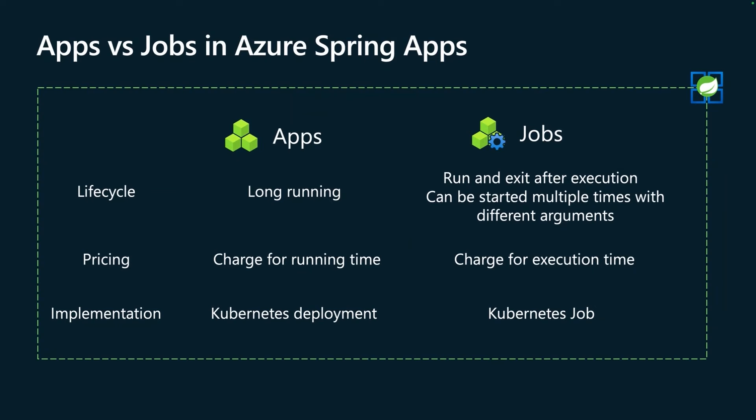Azure Spring Apps jobs are different. These are short-lived applications. A job runs only for its execution — when the job terminates, Azure Spring Apps does not restart it. Jobs have a definitive start time and a definitive end time. Underneath the hood, Azure Spring Apps uses the Kubernetes jobs feature to implement the jobs application model. Pricing is another difference: because applications are always running, they will always be charged. Jobs, on the other hand, are only charged when they run. This is a really good feature for batch applications — you only want to be charged when your batch application is running.